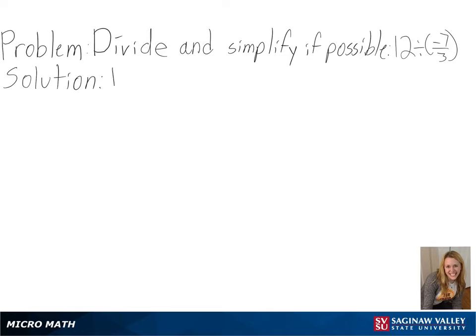Our problem is to divide and simplify, if possible, 12 divided by negative 7 over 3.